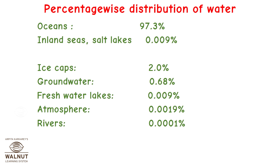Percentage-wise distribution of water: Oceans are 97.3%. Inland seas and salt lakes are 0.009%. Ice caps are 2%. Groundwater is 0.68%. Fresh water lakes are 0.009%. Atmosphere is 0.0019%. Rivers are 0.0001%. This brings us to a total of 100%.